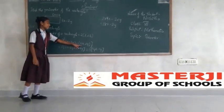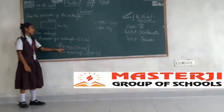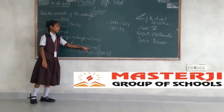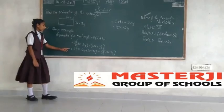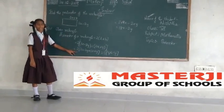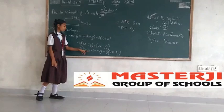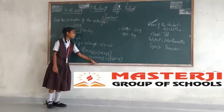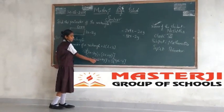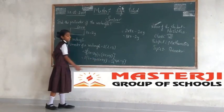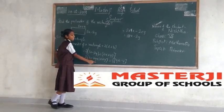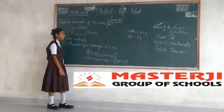So it's equal to 3x minus 2y plus 6x plus 5x. This is equal to 2x minus 2y plus 6x plus 5x.